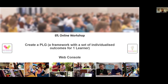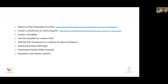We're going to start off by looking at what is a PLG, as well as some examples of the ways different schools have structured their PLGs. Some schools choose to also track progress and add a continuum, so I'll signpost you to where you can find further information on how you can create a continuum to track progress against items within the PLG. We'll then look at creating a template for a PLG, then use the template to actually create a PLG. A PLG is two things: it's a framework with a set of individualized outcomes for one learner, and it's automatically also an assessment book.